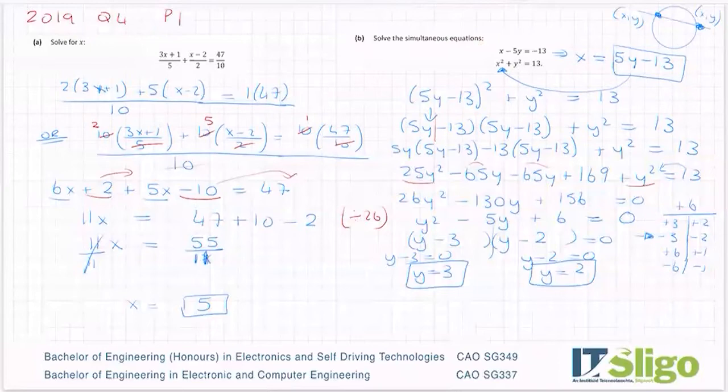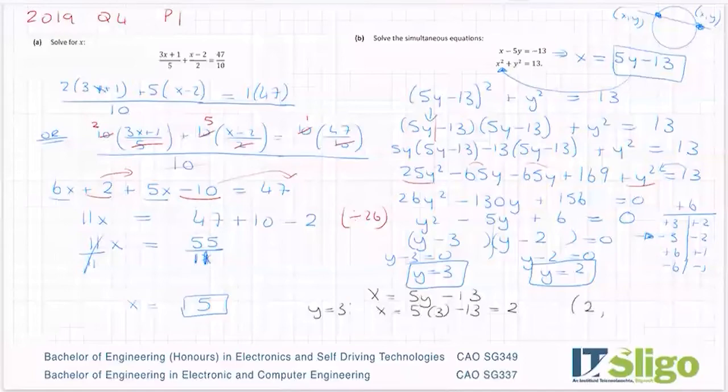So x = 5y - 13. Well, when y was 3, x = 5 times 3 - 13, five threes are 15, which is 2. So that is the point x comma y (2, 3). And then when y was 2, x = 5 times 2 - 13, five twos are 10 minus 13 is -3. So that is the point x comma y (-3, 2).